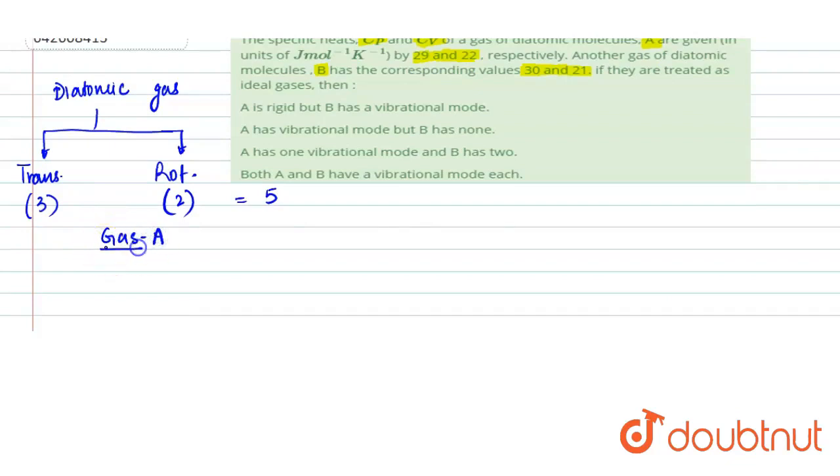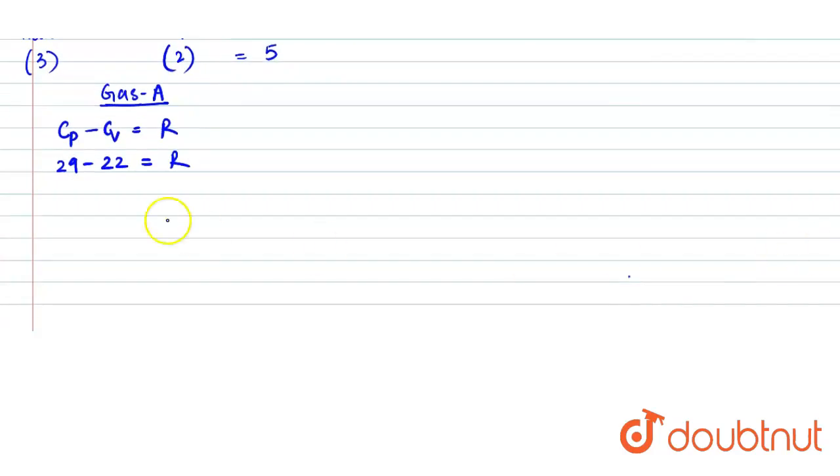For gas A, Cp value is 29 and Cv value is 22. We know the relation that is also called as Mayer's relation. Cp minus Cv is equal to R. From here we can see 29 minus 22 is what R is. So, that means the value of R is 7.